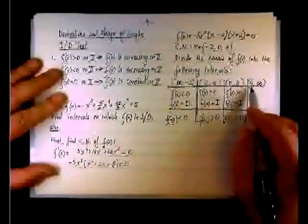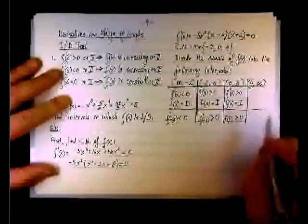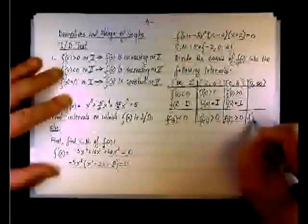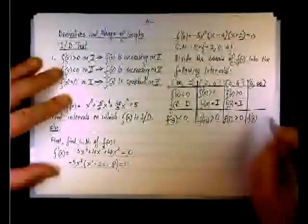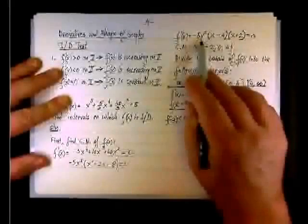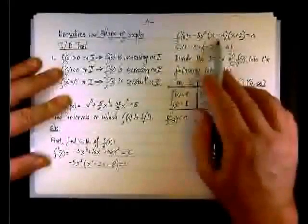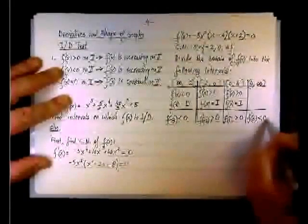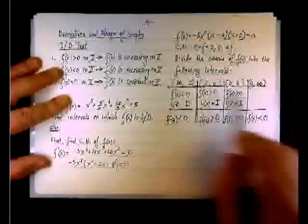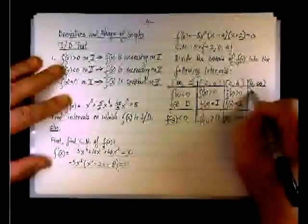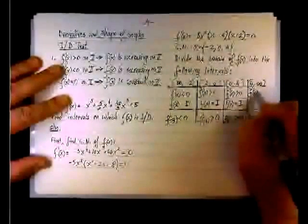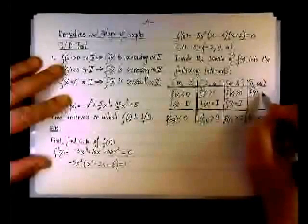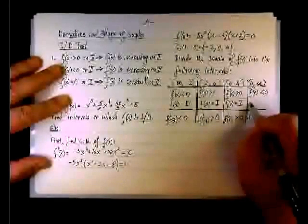The last interval to check is 4 to infinity. I pick the test point x equals 5. The factors give negative, positive, positive — so the product is negative. On this interval, f prime of x is negative and the function is decreasing.